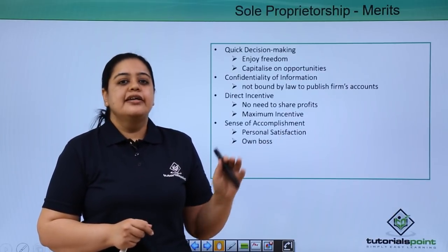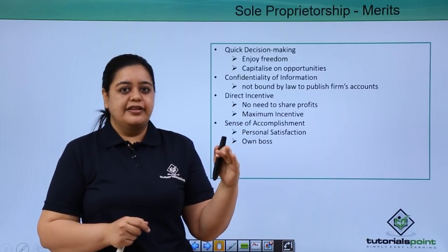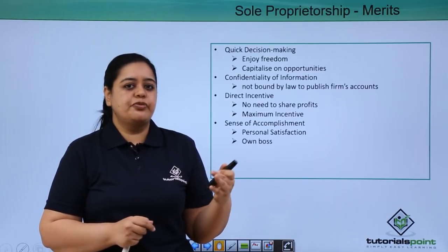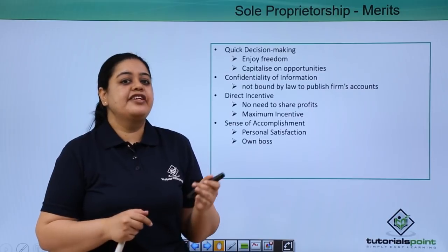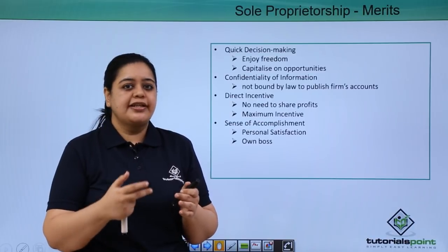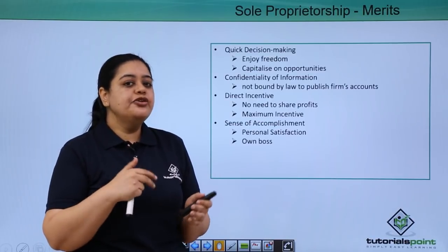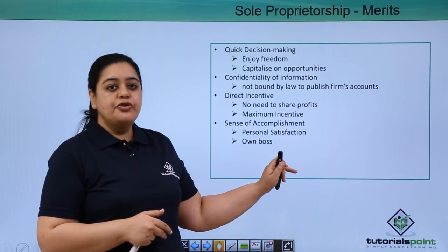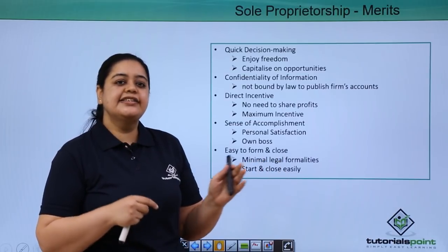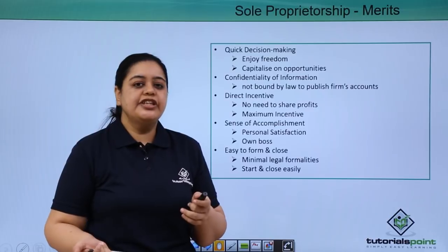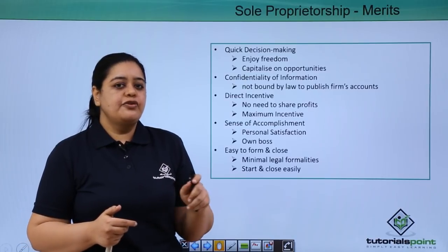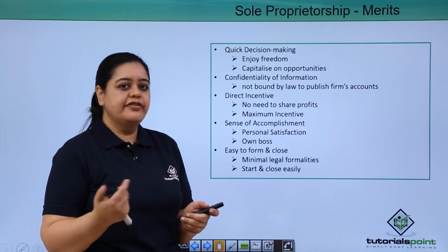There is also a sense of accomplishment. When Rama's kitchen reaches a certain level — say it becomes a household name after a few years — it is a sense of accomplishment for the sole proprietor because they have achieved something in life. Most people nowadays don't like the 9-to-5 job because of stress and working for someone else; when you work for yourself, you become your own boss and it gives the highest level of satisfaction. Lastly, it is easy to form and easy to close — you don't need many registrations, and if you want to close the business, you can just sell it off and move away.